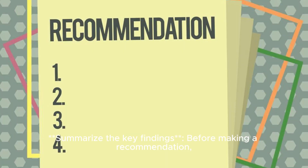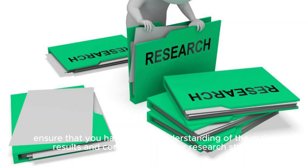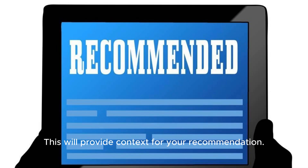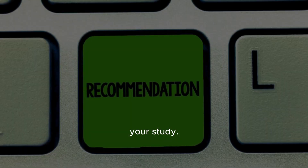Step 1: Summarize the key findings before making a recommendation. Ensure that you have a clear understanding of the main results and conclusions of your research study. Step 2: Identify the problem or issue. Clearly state the problem or issue that your research aimed to address. This will provide context for your recommendation.